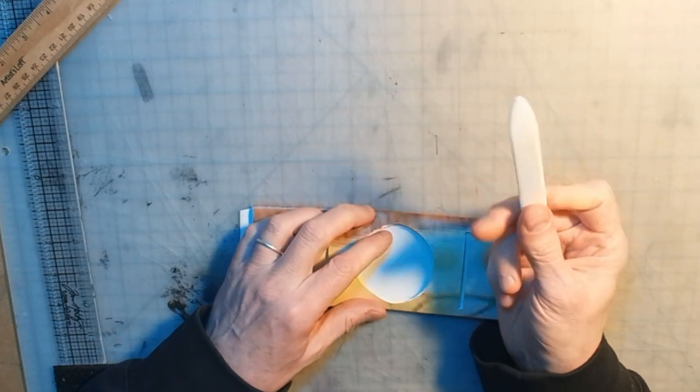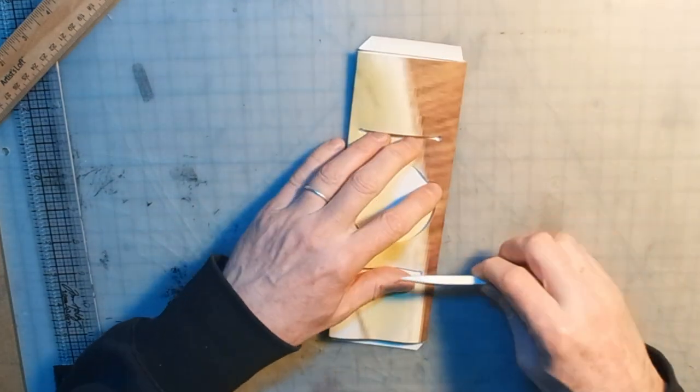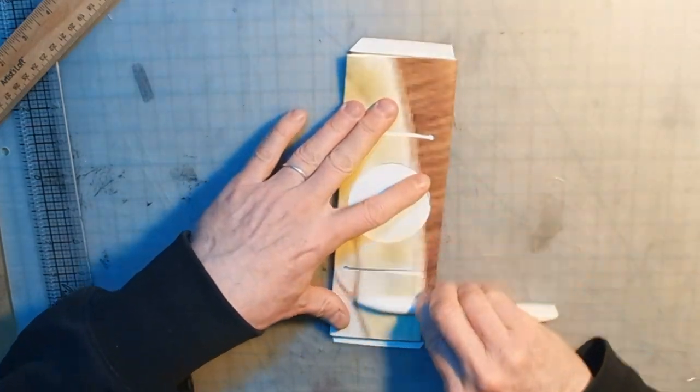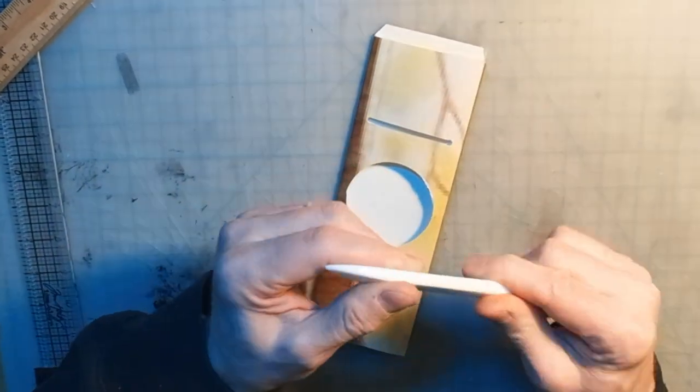This is a bone folder. Mine is not actually made of bone. It's like some plasticky Teflon. But they're good for flattening things without leaving a mark.